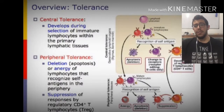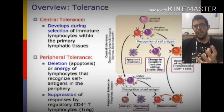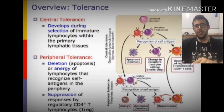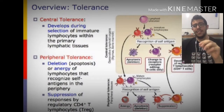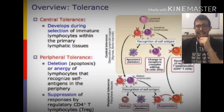Peripheral tolerance, on the other hand, is the deletion or anergy — which is the abnormal immune response of lymphocytes that recognize self-antigens in the periphery. It also causes the suppression of responses by regulatory CD4 T lymphocytes, known as Treg.